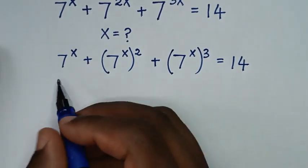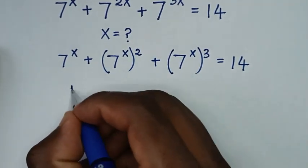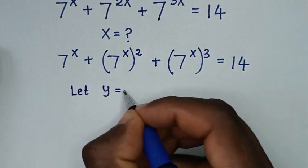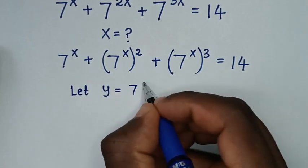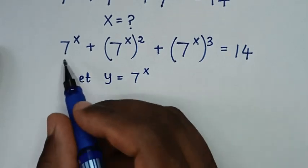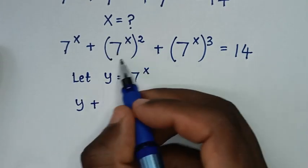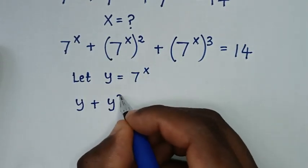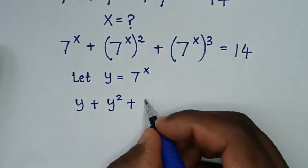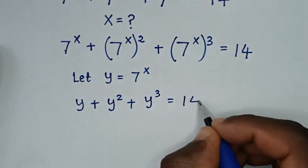In the next step, 7 power x is common, so we let y equal to 7 power x. Then our equation becomes y plus y square plus y power 3 is equal to 14.